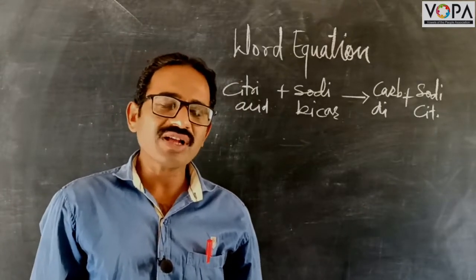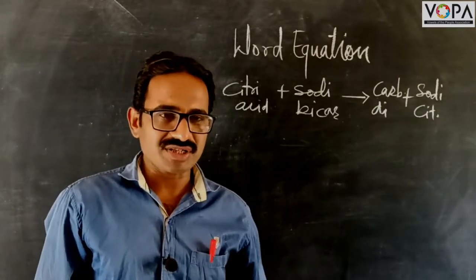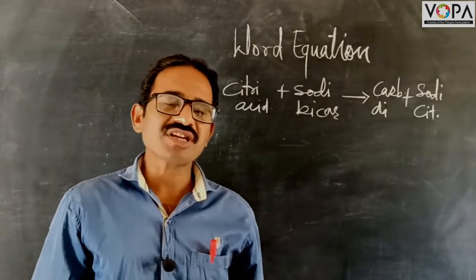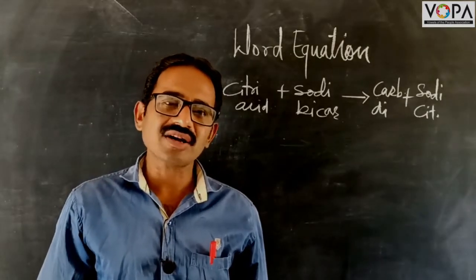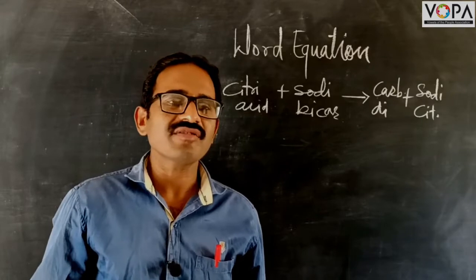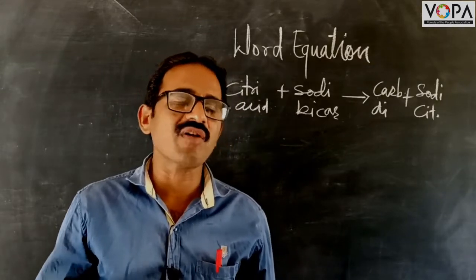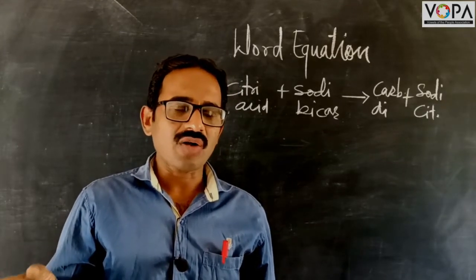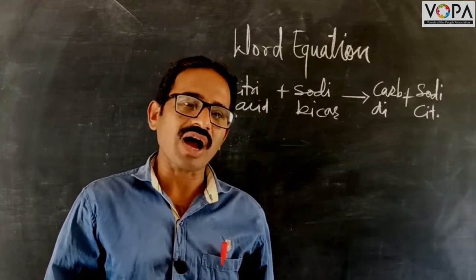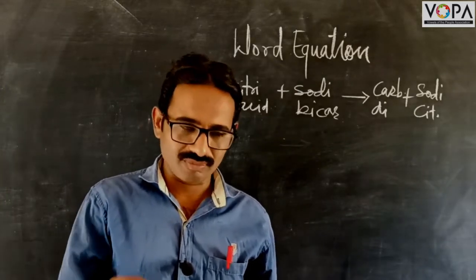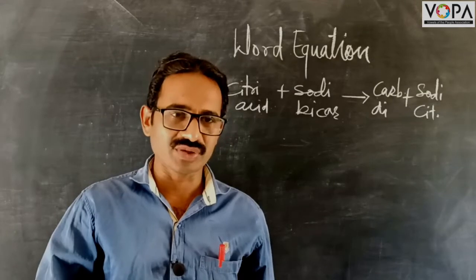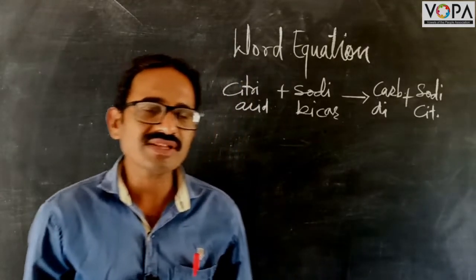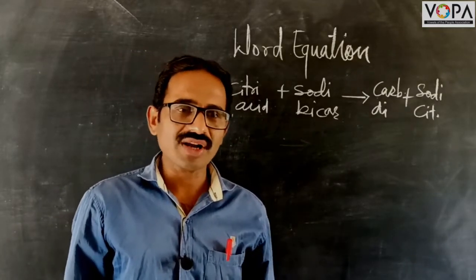Chemical change is also called permanent change because it does not regain the original substance. Another type of change is physical change. When ice is converted into water, this type of change is called physical change, because the water can be converted into ice again. This type of change is called physical change.